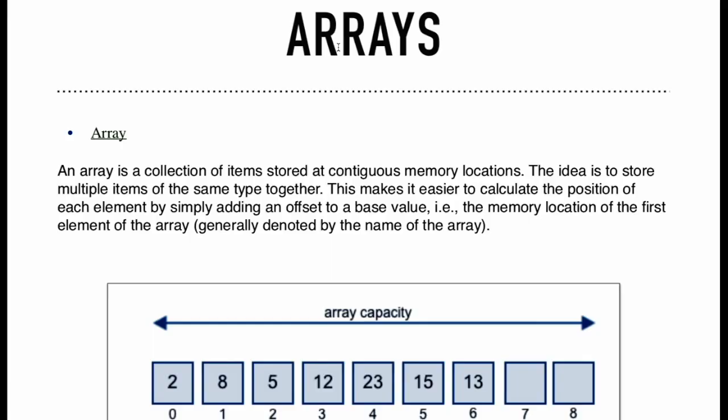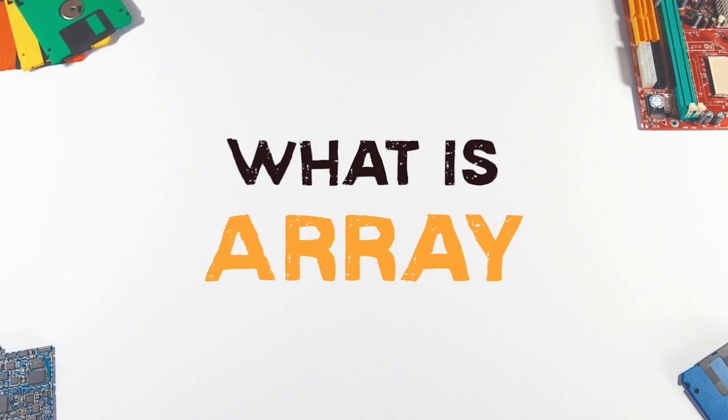Yeah, we all know array has many definitions. An array is a collection of items stored at contiguous memory locations. The idea is to store and manipulate items of the same type together. This makes it easier to calculate the position of each element by simply adding an offset to base value.